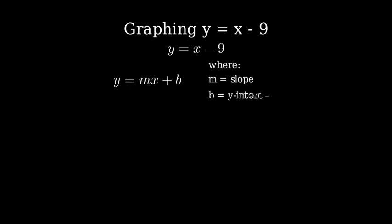First, we need to identify that this equation is in slope-intercept form, which is y equals mx plus b, where m is the slope and b is the y-intercept.